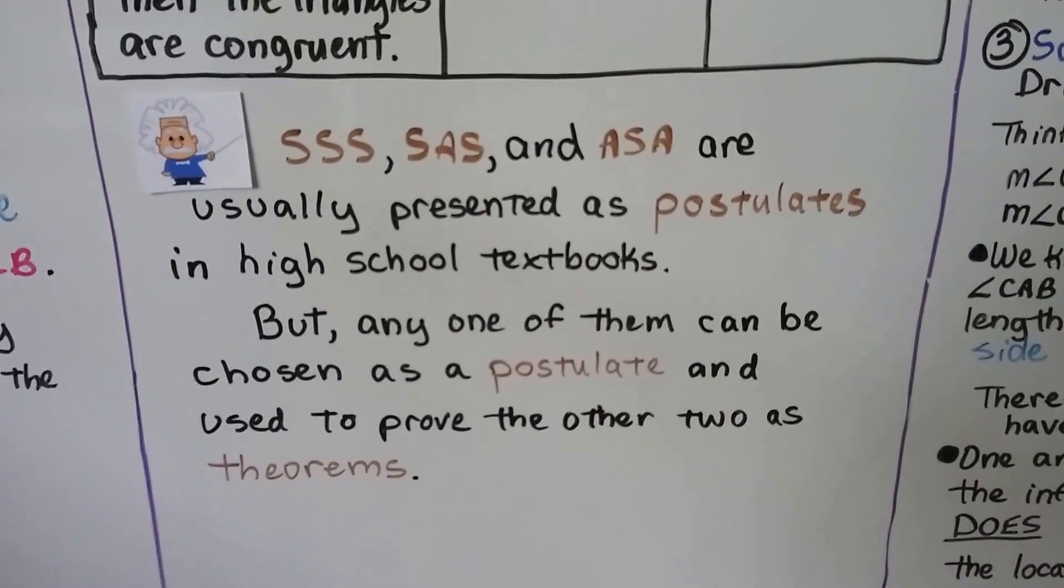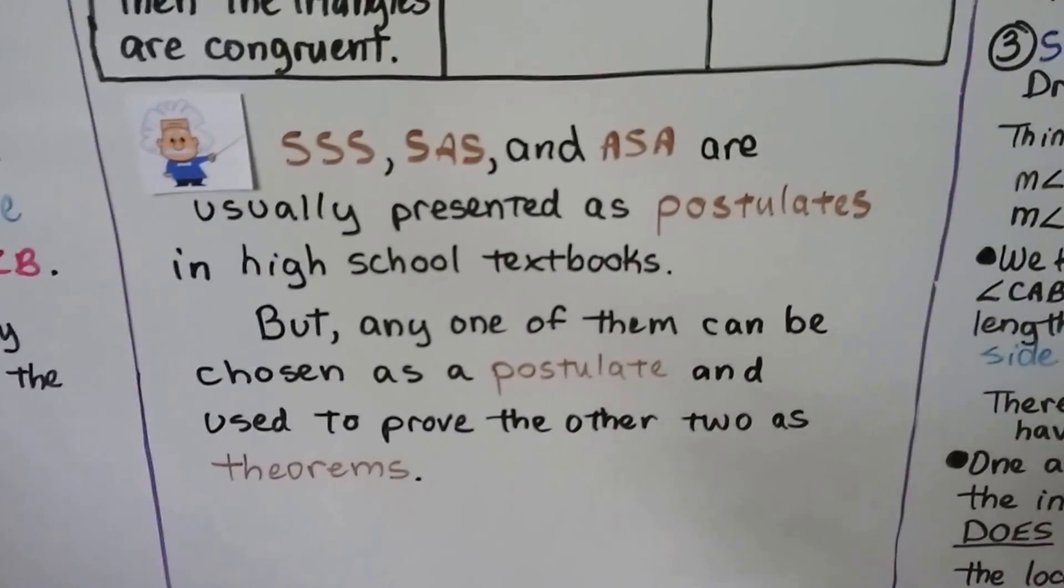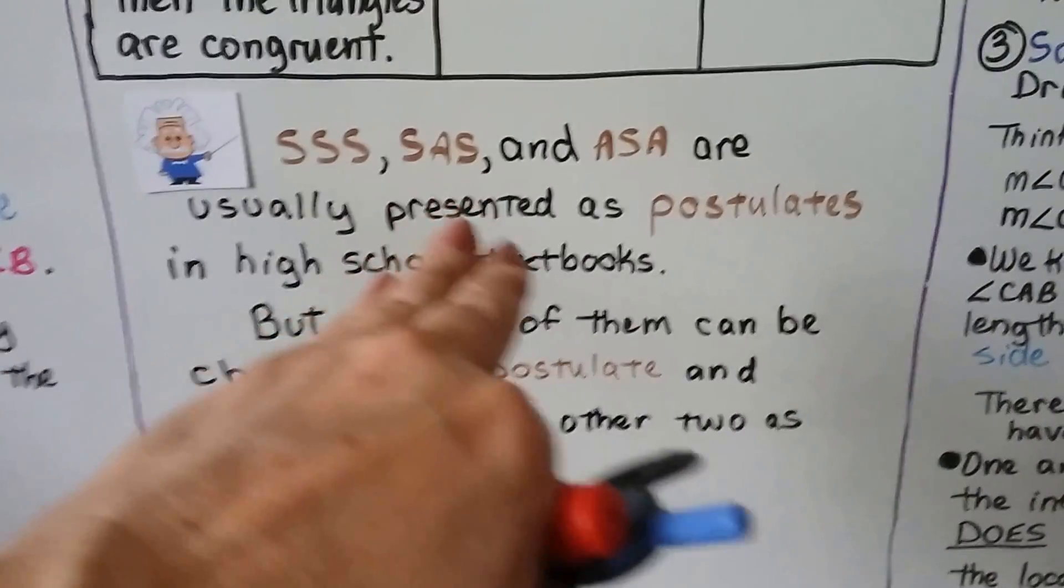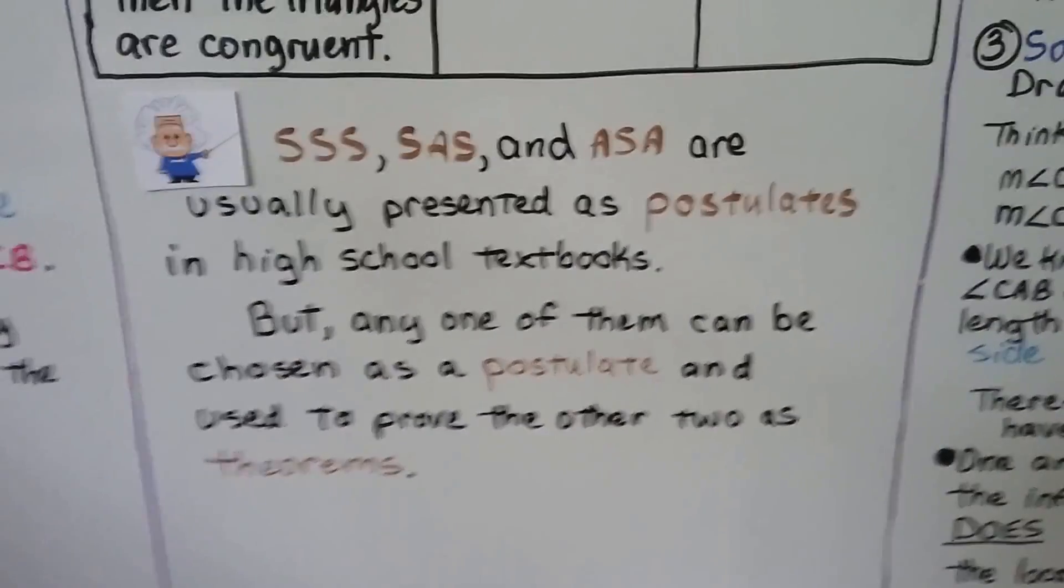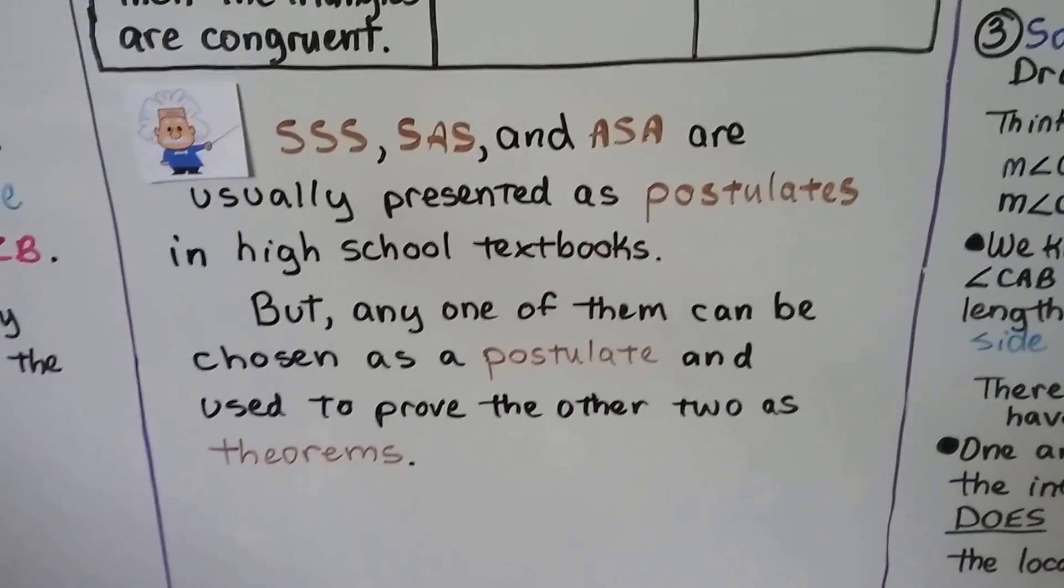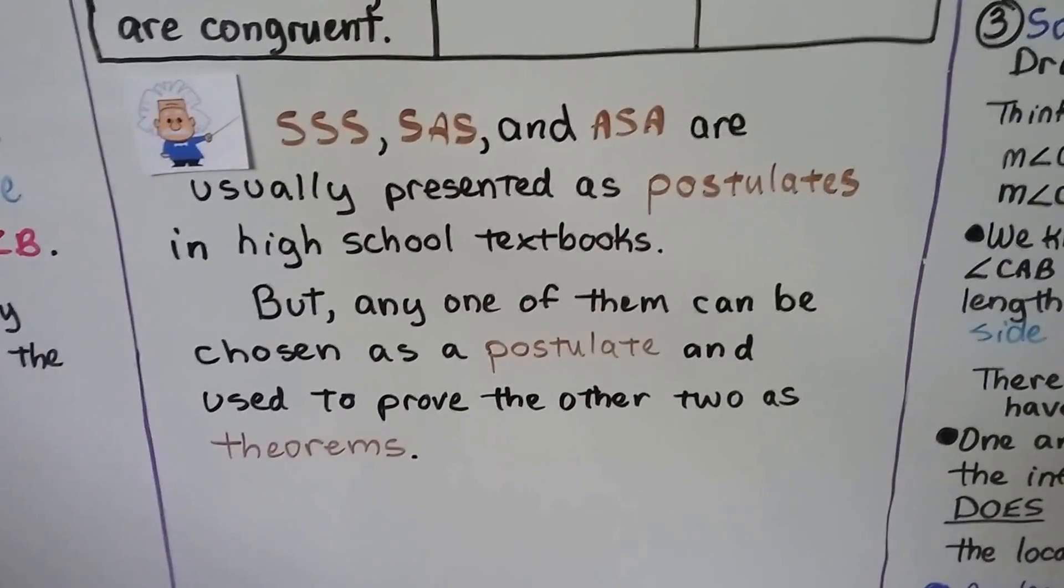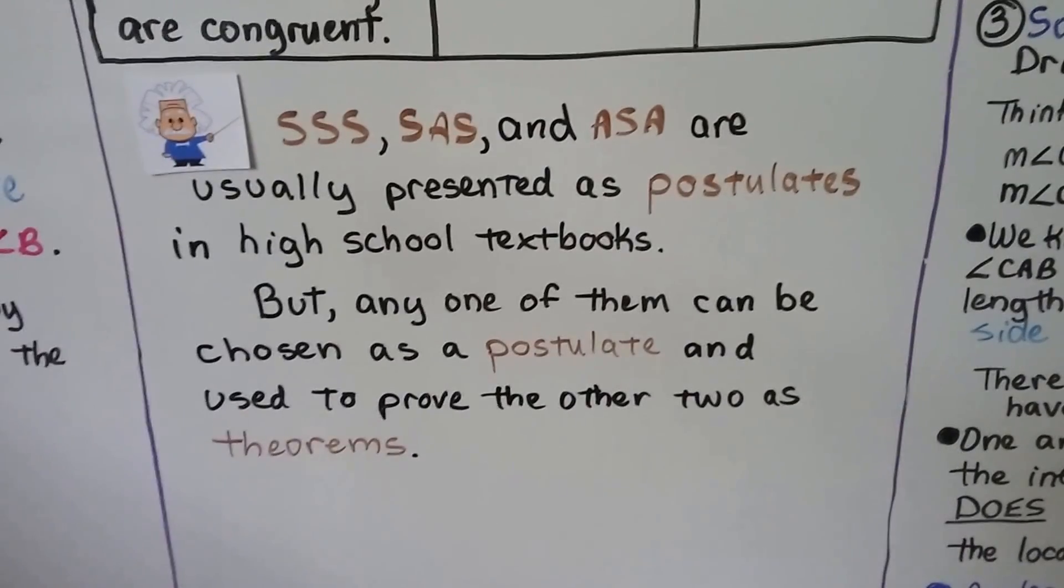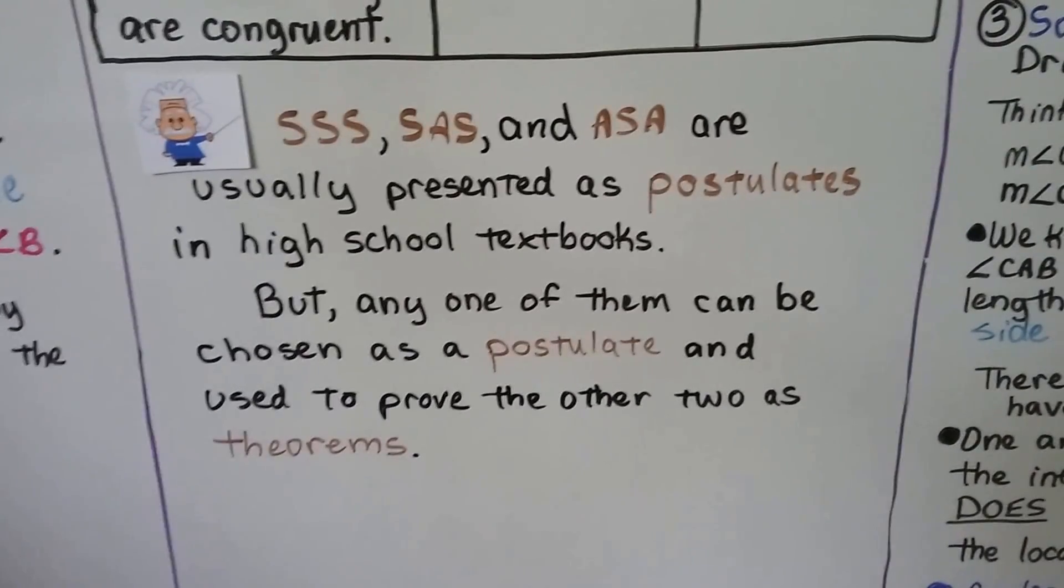SSS, SAS, and ASA, so that would be side-side-side, side-angle-side, and angle-side-angle, are usually presented as postulates in high school textbooks. But any one of them can be chosen as a postulate and used to prove the other two as theorems.